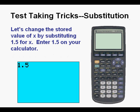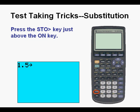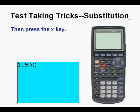Let's change the stored value of X by substituting 1.5 for X. Enter 1.5 on your calculator. Press the storage key just above the on key at the lower left of the keypad, then press the X key next to the alpha key. Press enter.